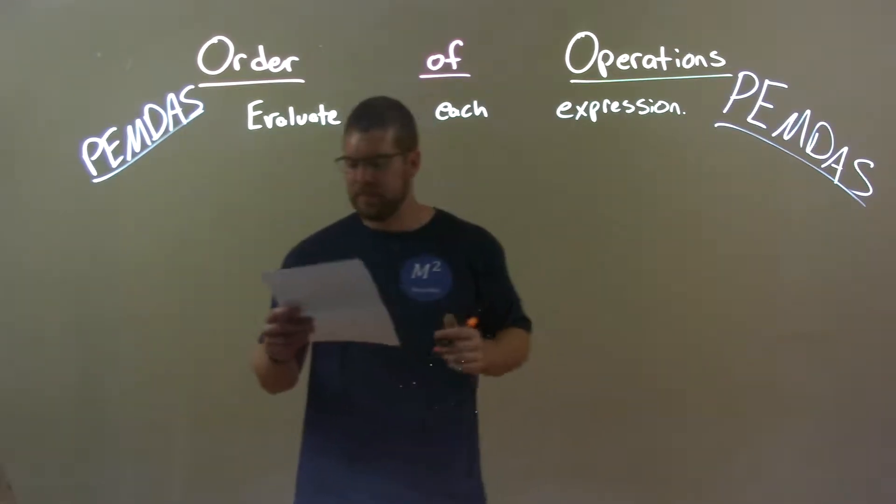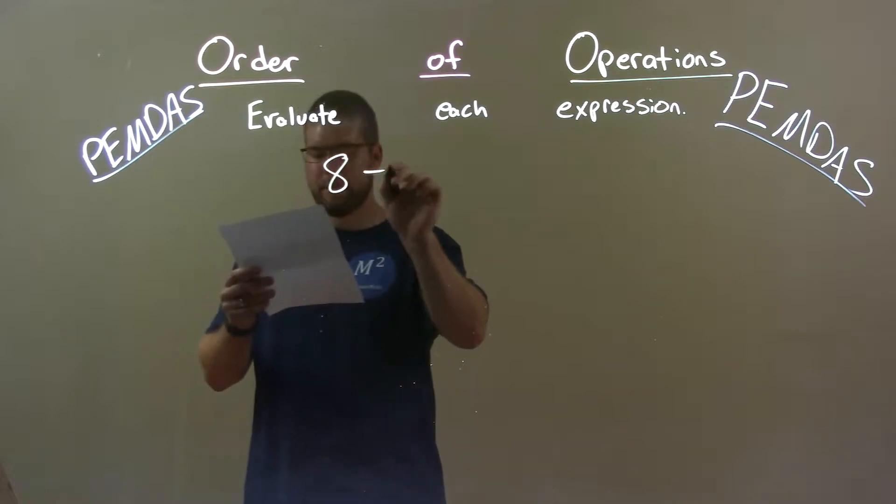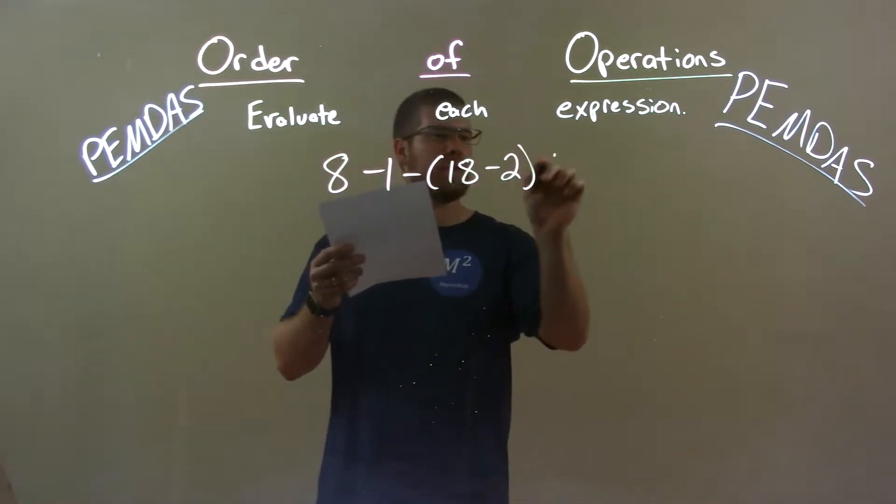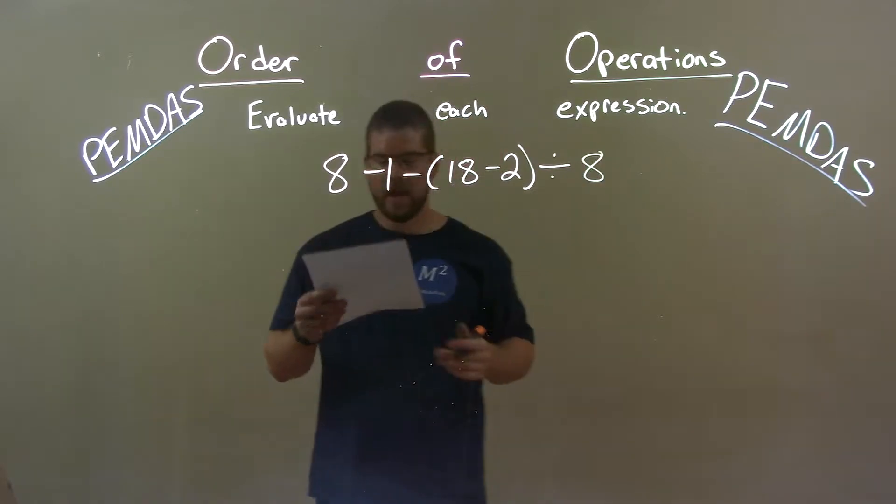So, if I was given this expression, 8 minus 1 minus 18 minus 2 divided by 8.